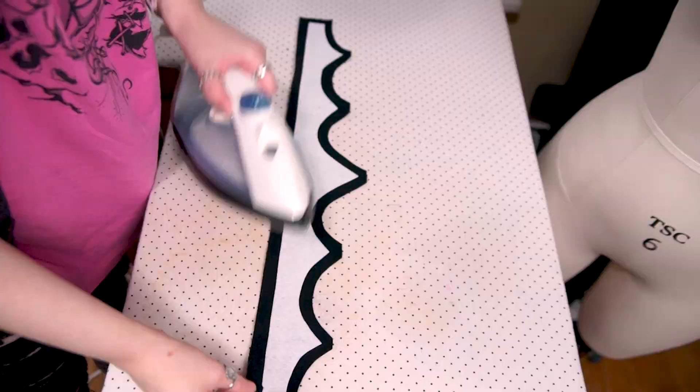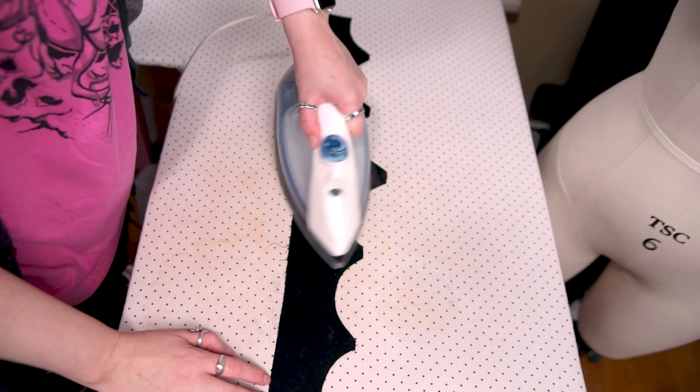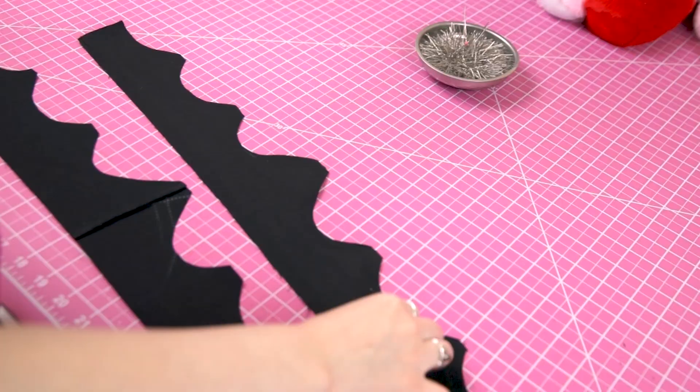Luckily this stabilizer is fusible so I attached it to the wrong side of my outer fabric with my iron. This is the piece that is facing out when the crown sits on your head, not the lining. However, if you have sew-in interfacing, you'll want to baste it to your lining so that the stitching won't be seen on the finished crown, or at least won't be seen as much.